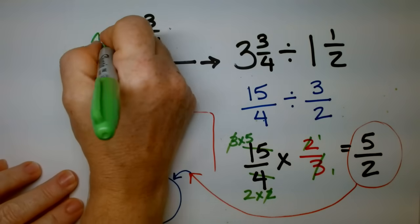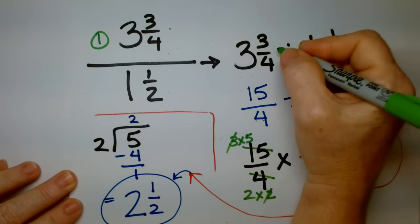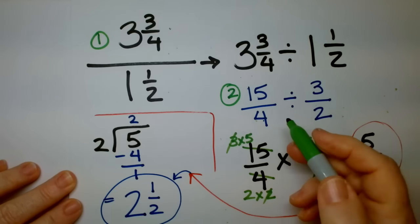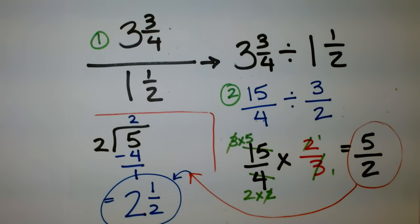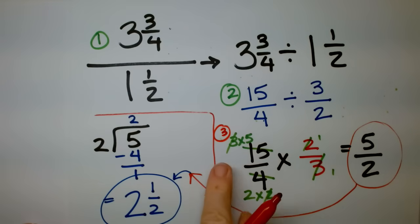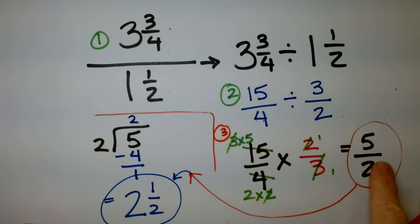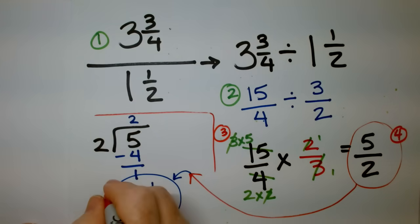We started here. We rewrote the problem. And then, we turned it into improper fractions here. We flipped it. This is step 3. We flipped it. And then, we did the multiplication. And then, we turn it back into an improper. We turn the improper fraction back into a mixed number.